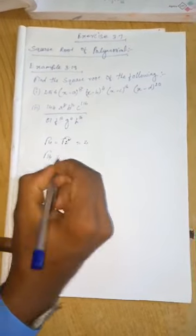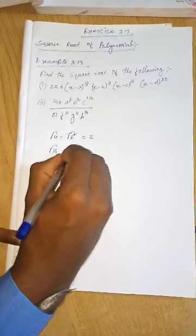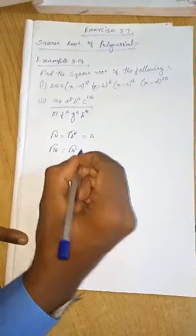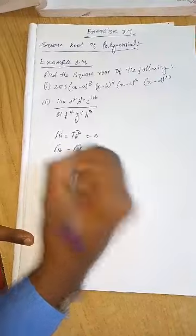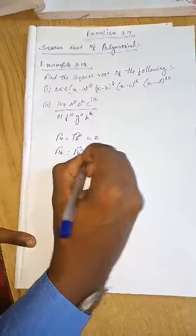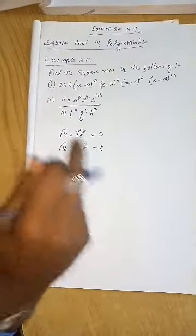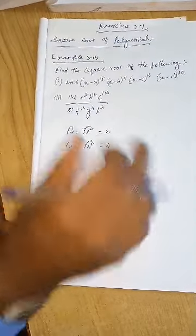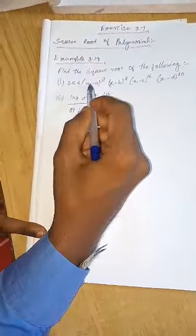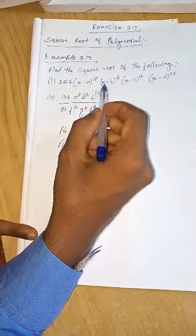Next example: square root of 16. 16 we write as 4 squared, so square root of 4 squared — the square root cancels and the answer is 4. That is the square root of 16. The same way, when some variables like x-a, x-b, x-c, x-d are given, we simplify them similarly.